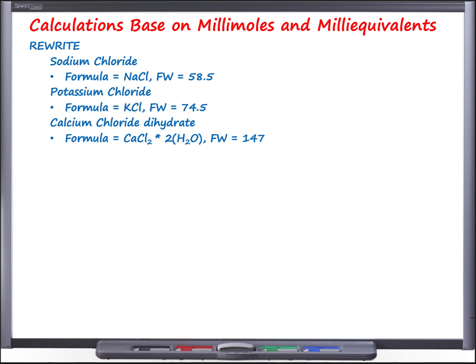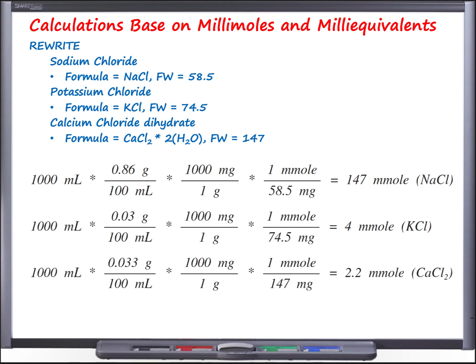We'll solve all three simultaneously. We start with 1,000 milliliters (one liter) and multiply by the concentration of each ingredient expressed as percent weight per volume. For sodium chloride, 0.86% w/v means 0.86 g per 100 mL. For potassium chloride, 0.03% means 0.03 g per 100 mL. For calcium chloride, 0.033% means 0.033 g per 100 mL. Multiplying cancels the milliliter units, leaving us in grams of each ingredient.